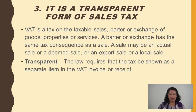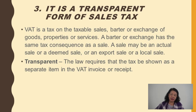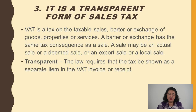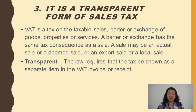Number three: VAT is a transparent form of sales tax. Before 1988, the business tax paid was the subsequent sales tax. VAT is called a transparent form because it is a tax on taxable sales, barter, or exchange of goods, properties, or services. The law requires that the tax be shown as a separate item in the VAT invoice or receipt. So on every invoice, the VAT is separately billed and shown — that is why accredited printers produce receipts with regulated formats.